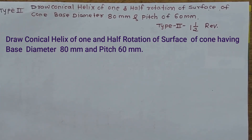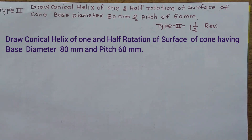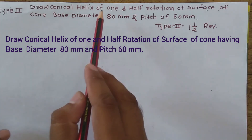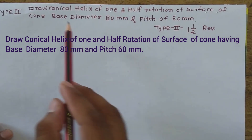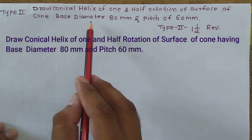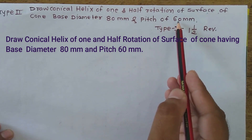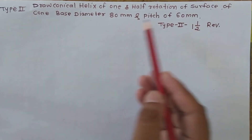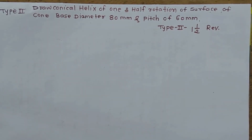Hi friends, today we will see a problem on conical helix. This is a Type 2 problem where the conical helix completes one and a half rotations. The problem statement: draw a conical helix of one and half rotation on the surface of a cone with base diameter 80 mm and pitch of 60 mm.